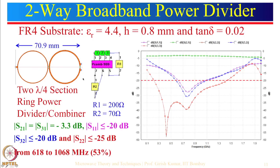We define port 1, port 2, and port 3. Between port 4 and 5 we put a resistance of 200 ohm, and at the other location 70.7 ohm. The two-section design improves bandwidth for the power divider, and the two isolation resistances improve bandwidth for use as a power combiner.